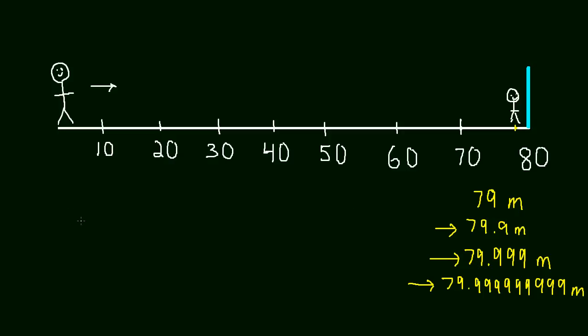The way we write that is we say the limit, and we just abbreviate it LIM. The limit of this guy approaching the wall. In other words, the limit as this guy gets closer to the wall. The limit as he gets closer to the wall, and then we have to decide what we're talking about, what limit we're talking about. In our case, what we're measuring is distance, so the limit as he gets closer to the wall of the distance.